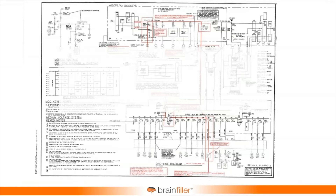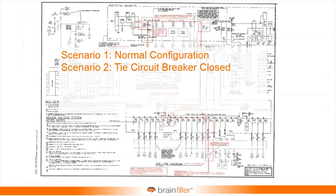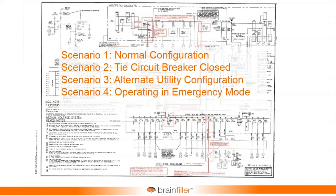And suddenly the question becomes, if I'm going to perform arc flash calculations, I want to base this on the normal configuration — the normal short circuit current, the normal configuration of ties open or closed. And then alternative scenarios: maybe the tie breaker was normally open, and now what happens if it's closed? Maybe an alternative utility configuration, emergency mode. If you have larger complex systems, you can have all kinds of different scenarios.